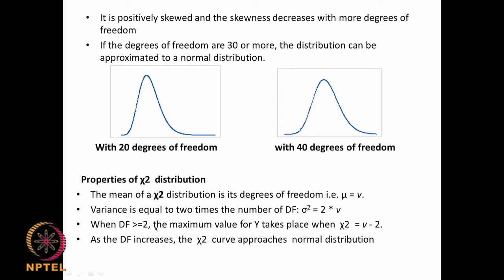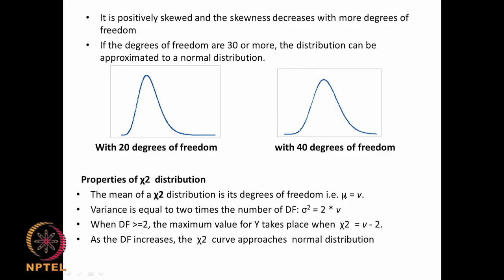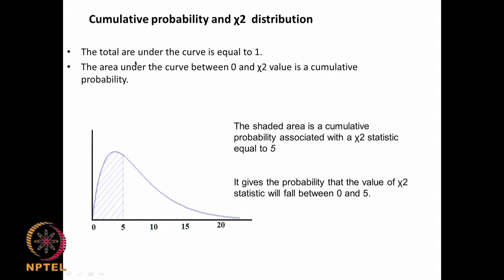When Df ≥ 2, the maximum value for y occurs when chi-square equals ν (degrees of freedom) minus 2. So if degrees of freedom is 3, the maximum occurs at chi-square = 1. As degrees of freedom increases, chi-square approaches the normal distribution. The chi-square has mean equal to degrees of freedom, variance equal to 2 times degrees of freedom, and we can also get cumulative probability since the total area under the curve equals 1.